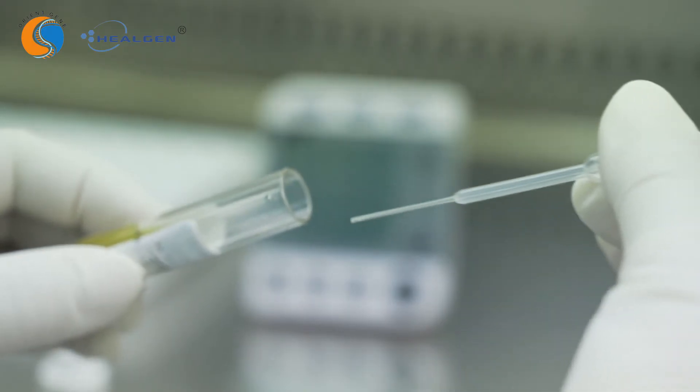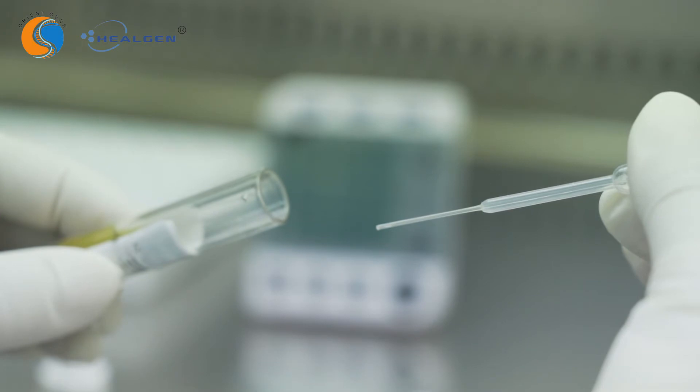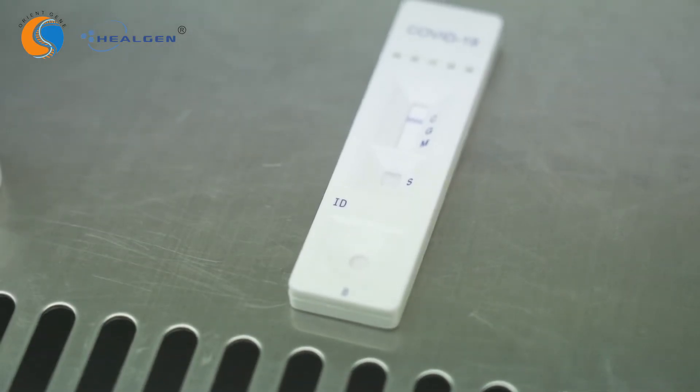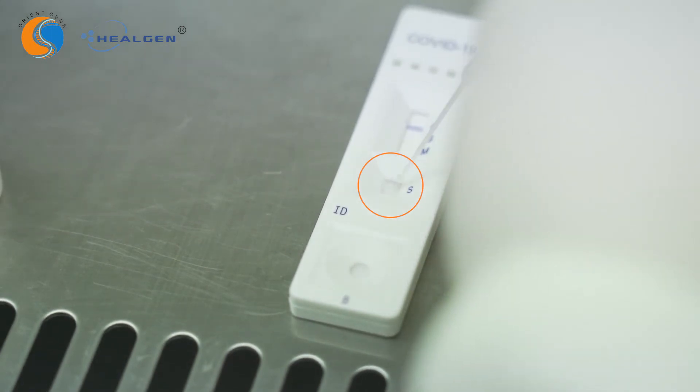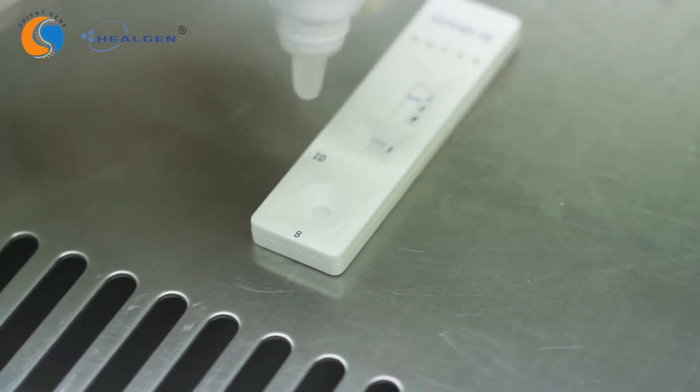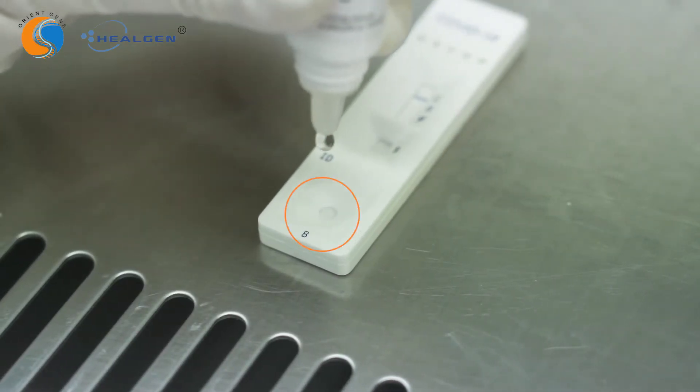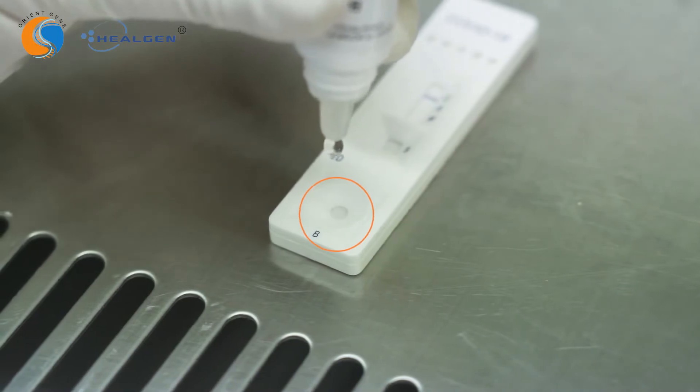When using a disposable dropper for serum or plasma specimen, draw a specimen until it reaches the specimen line. Hold the dropper vertically and transfer one drop of drawn specimen into the sample well labeled as S on the test cassette. Then add two drops of buffer to the buffer well labeled as B immediately after.